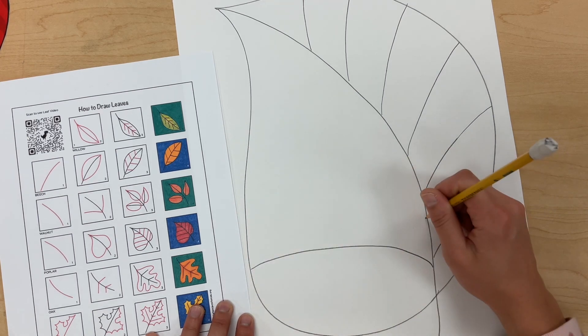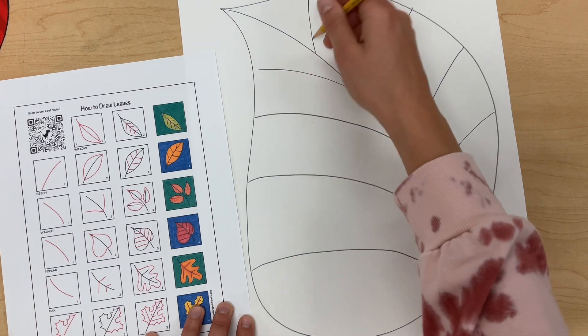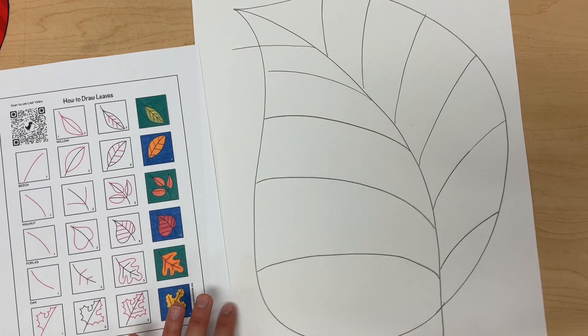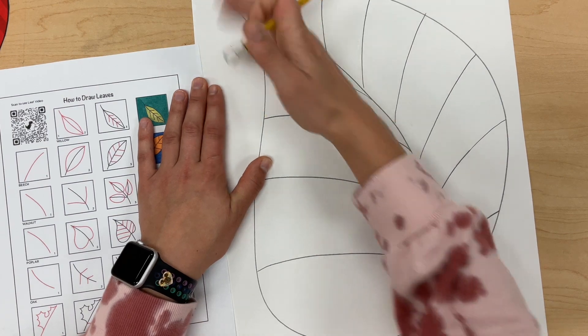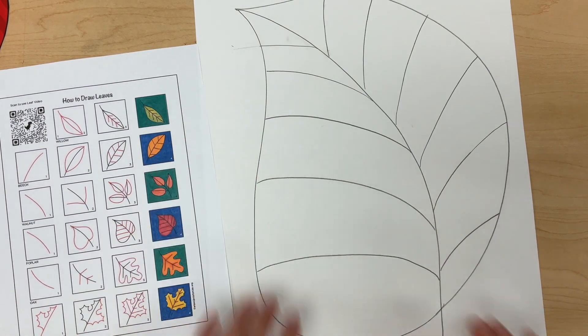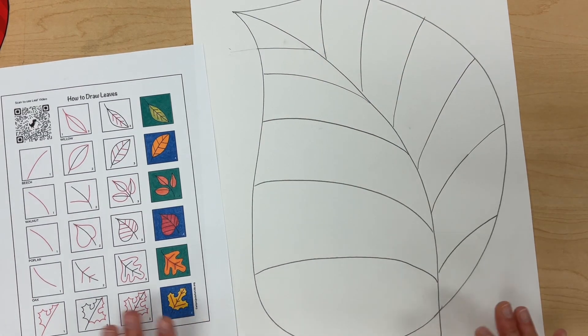And again, my leaf might not look exactly like the other leaves. And if I make a mistake, I can take my eraser and just erase that line. All right, and there we go. So I think it looks pretty cool.